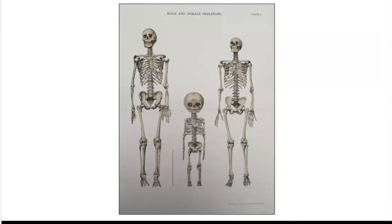By 1820, Barclay — he of the horse and ostrich skeletons in the last lecture — settled on a resolution to the problem of larger proportional skulls in women by noting that children's skulls were also larger in proportion to their bodies than men's. So it followed, according to Barclay, that women were not more intelligent than men — they just suffered from incomplete growth.